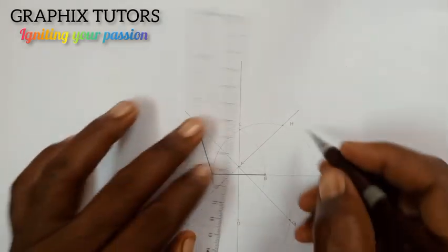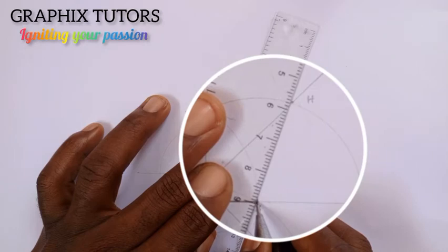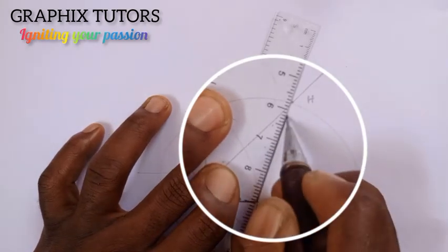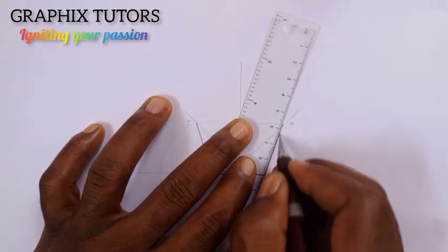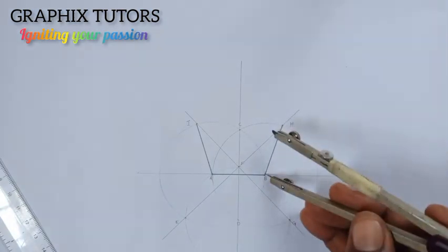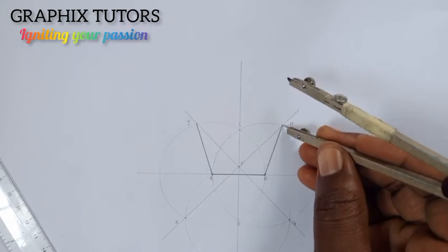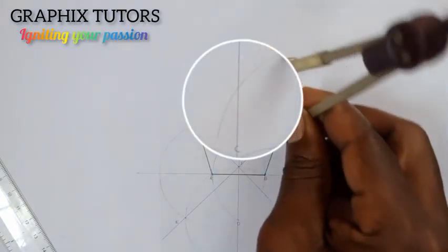Now with the same radius of AB, I'll place it at H, the same radius of AB. Place it at H, I'm going to draw an arc this way.